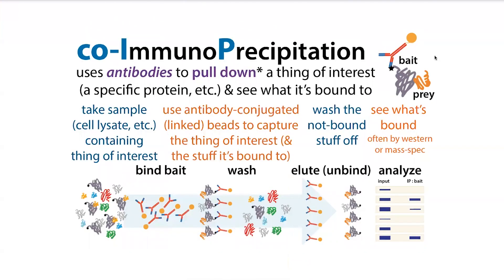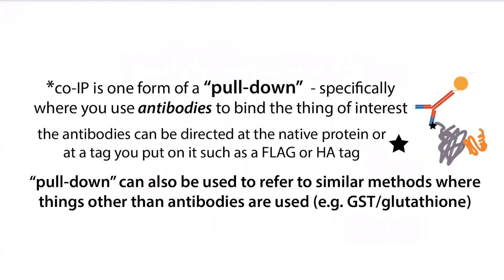We call it an IP or immunoprecipitation when we use an antibody attached to beads to capture our bait protein. We refer to it as a co-IP when we're looking at what that protein was bound to. There are other types of pulldown where you can use things like an affinity tag to capture the bait protein, and all of these are referred to as pulldowns.